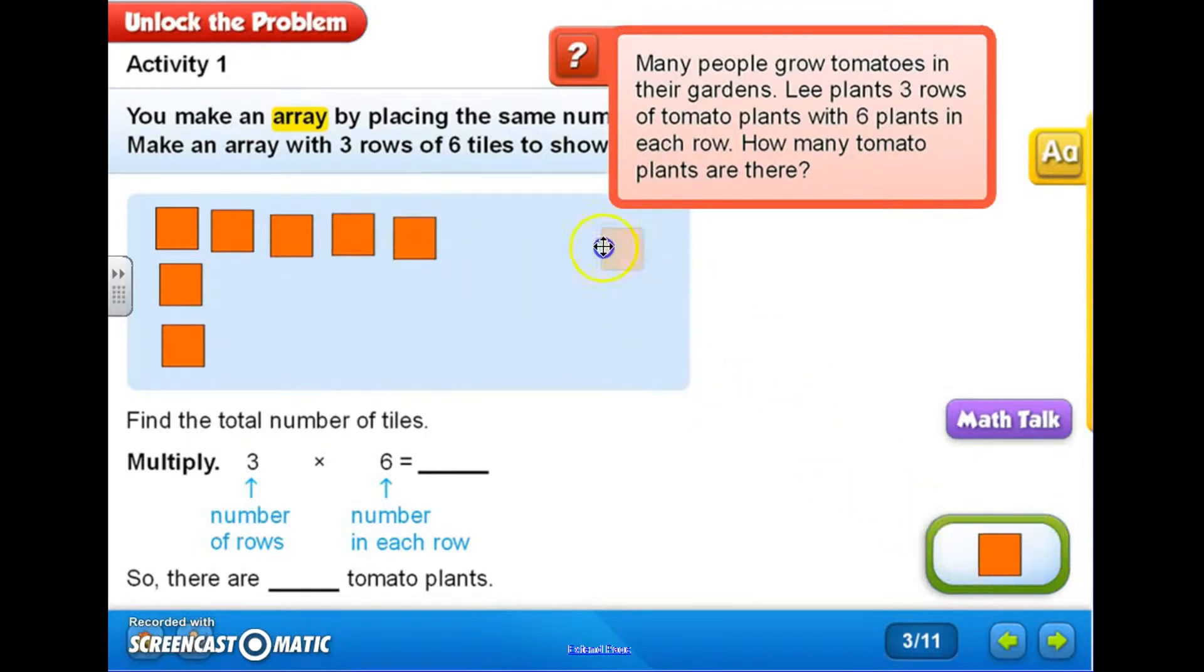I'm going to put the same number in row two. It's a little tricky getting these lined up nicely. It's easier when we're actually using objects and making an array, but we can do it on the computer as well. There's my second in that row, my third, fourth, fifth, and six.